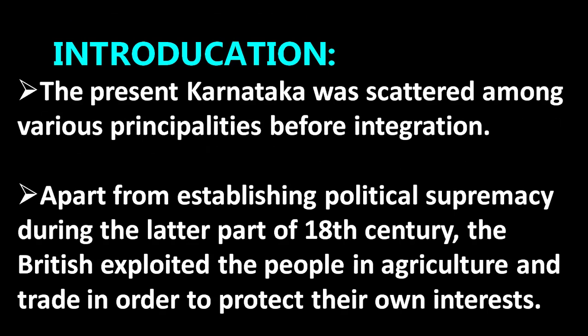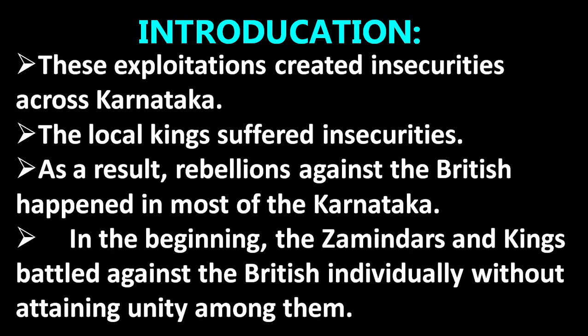Let's come to the introduction for this lesson. The present Karnataka was scattered among various principalities before integration. Apart from establishing political supremacy during the later part of the 18th century, the British exploited the people in agriculture and trade in order to protect their own interests. As a result, these exploitations created insecurities across Karnataka. The local kings suffered insecurities, and as a result, rebellions against the British happened in most of Karnataka.